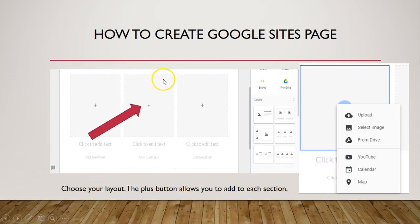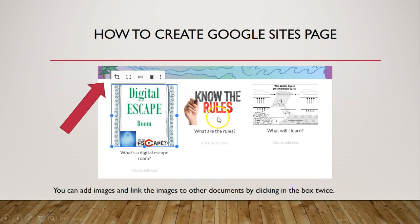To choose your layout, simply click on one of the images. The plus key allows you to either upload, select, pull from Drive, YouTube, Calendar, or even a map. Once there, you can add images and links to other documents — just click on the document or picture twice and you'll get a menu option that allows you to crop, uncrop, attach a link, or delete.